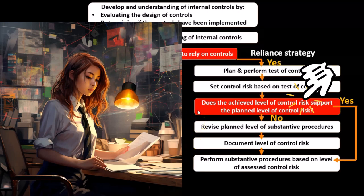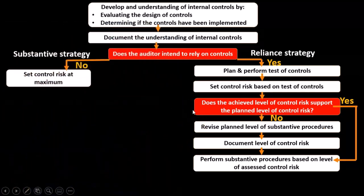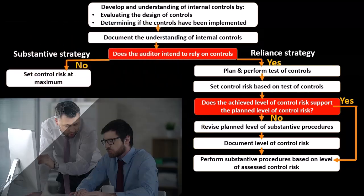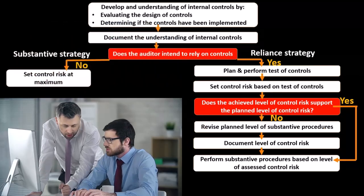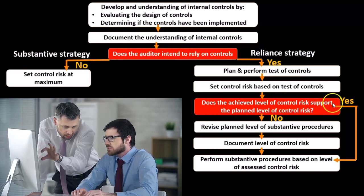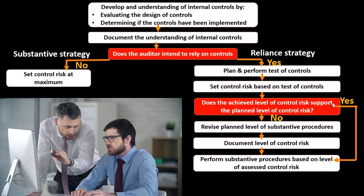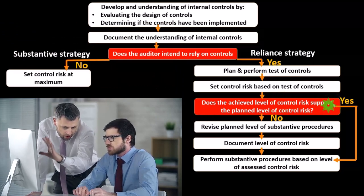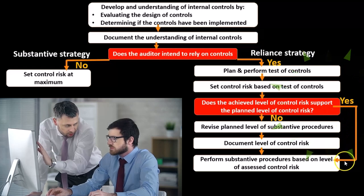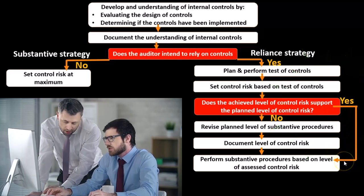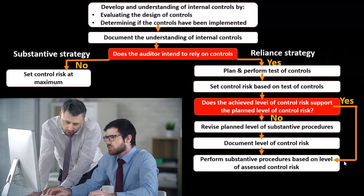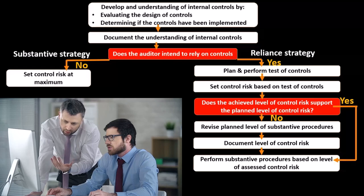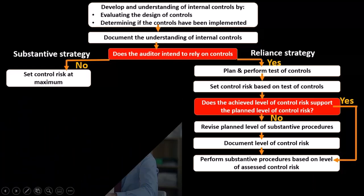If the answer to whether the achieved level of control risk supports the planned level is yes, then we rely on those controls and go straight to performing substantive procedures based on the level of assessed control risk we have determined.